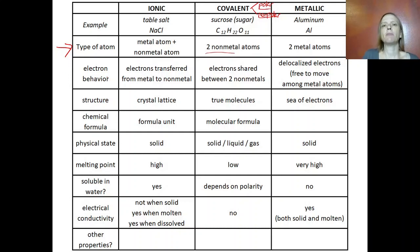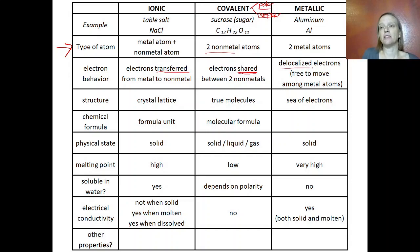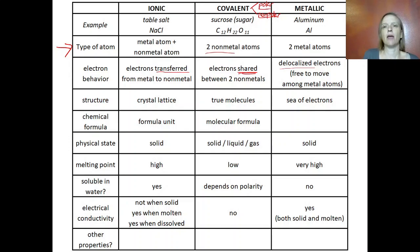The electron behavior: in ionic bonding, electrons are transferred from the metal to the nonmetal. In covalent bonding, electrons are shared between two nonmetals. In metallic bonding, delocalized electrons are free to move back and forth between metal atoms. The structure is different too: ionic compounds have a crystal lattice structure, covalent compounds are individual true molecules, and metallic bonding gives a sea of electrons. For the formula, we call the ionic formula a formula unit rather than a molecular formula.